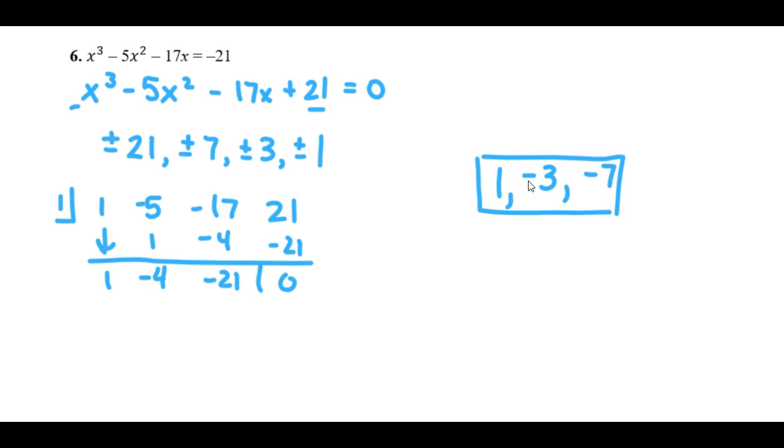If I were to try any other of these factors, like 21 or positive 7, they would give me a remainder down here that was not equal to 0. And I would know that that is not a solution to that equation.